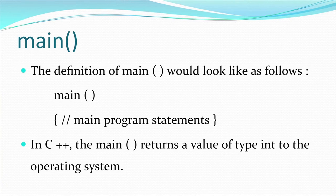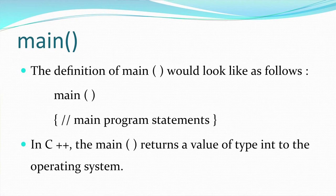The main function by default returns an integer value, so you have to give 'return 0' or any integer as the last statement. If you do not want the main function to return anything, then you declare 'void main', in which case you need not give a return statement. Functions are a set of code that can be reused again and again.